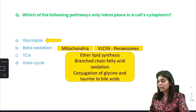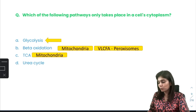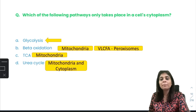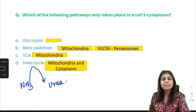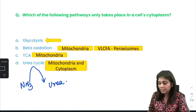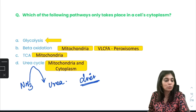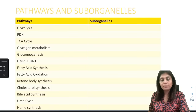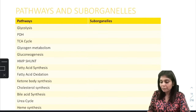The citric acid cycle happens in mitochondria. Urea cycling partly happens in mitochondria and partly in cytoplasm — just two steps happen in mitochondria, the remaining steps happen in cytoplasm. Urea cycle is the pathway that converts ammonia to urea for detoxification, and it happens in the liver. The sub-organelles involved include mitochondria and cytoplasm.